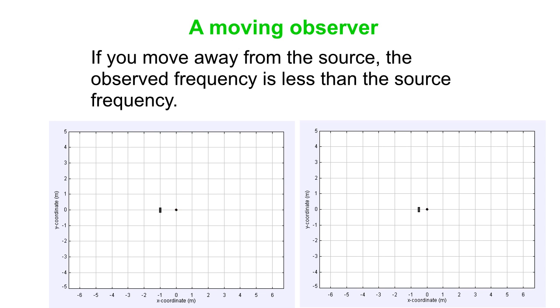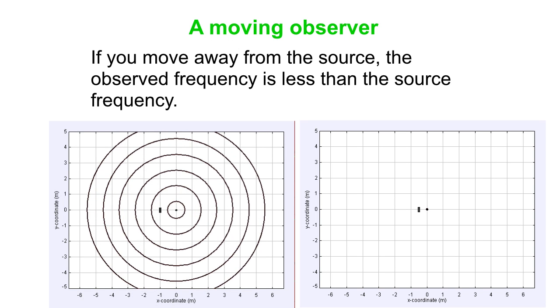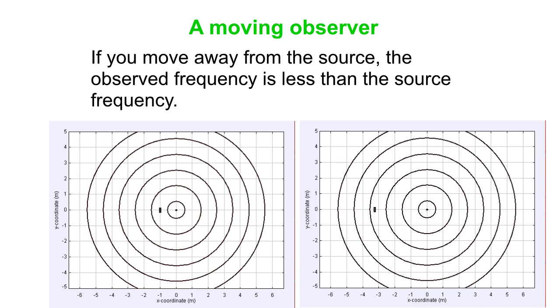Okay, let's just look at that moving away scenario. So on the left, again, just for reference, we've got the stationary situation. Both the observer and the source are stationary. On the right, the observer is now running away from the source and encountering fewer waves per unit time.